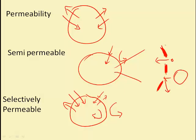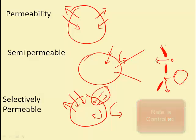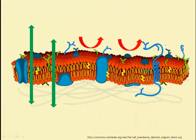The key feature of selective permeability is that the cell can actually control the rate at which materials move in and out. Small uncharged molecules like oxygen and carbon dioxide can easily diffuse across the cell membrane — it's as though the membrane isn't there at all.